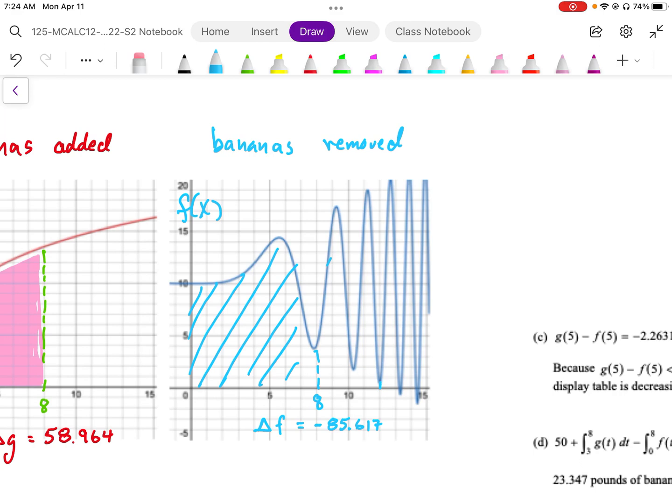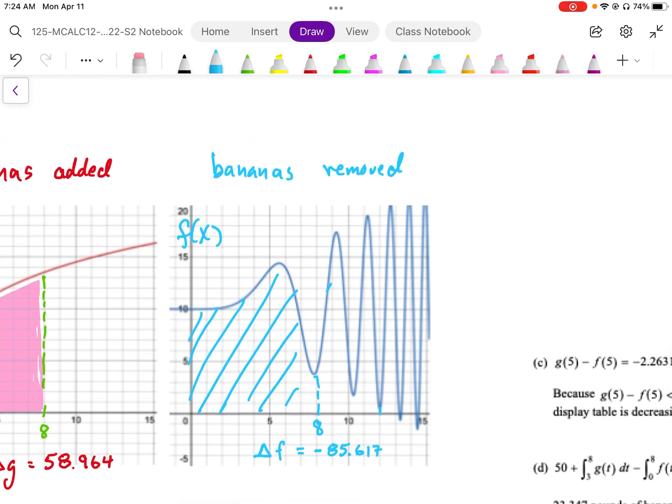We're going to calculate the total area under that curve from 0 to 8, and using again our graphing calculator and the integration function, we're going to end up with 85.617.